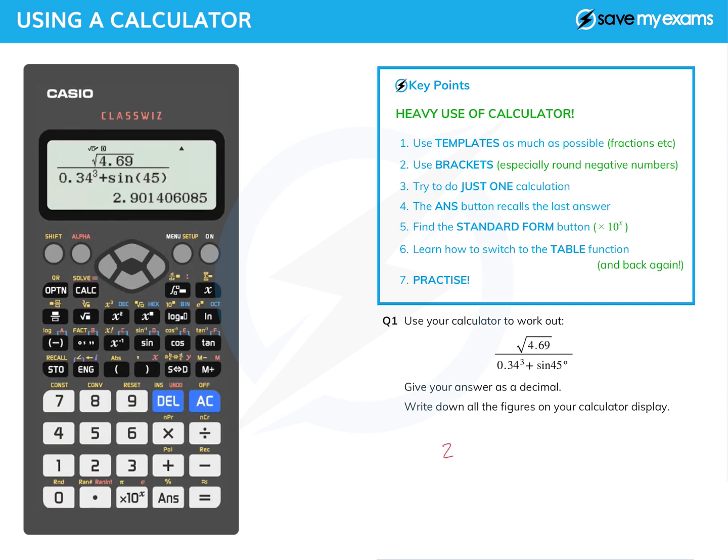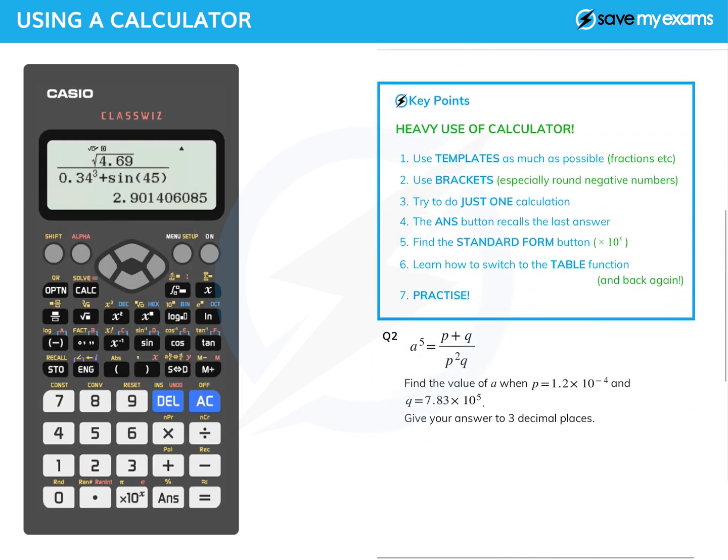Write down all the numbers on your display: 2.901406085. Don't worry about whether your calculator has more numbers or fewer numbers than other people's, the examiner will know what to do.